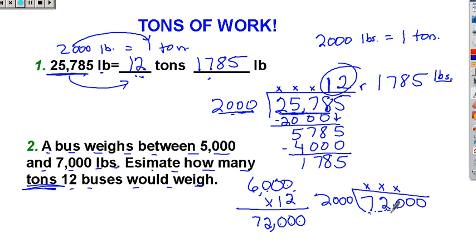In 7,200? Hmm. Well, 2,000, 4,000, 6,000, 8,000. That's too big. So I'd have 3 right there, which makes 6,000. Subtract and get 1, 2, 0, 0.